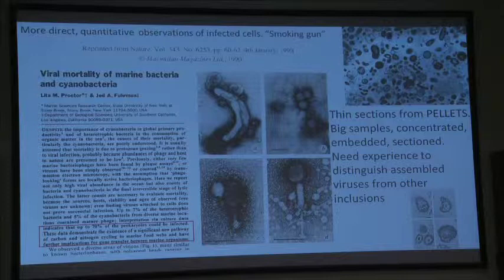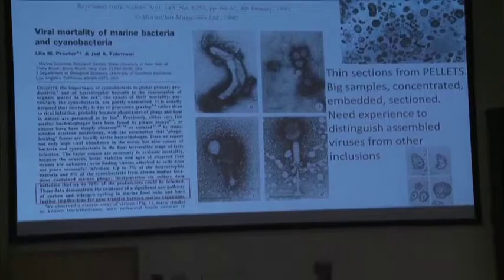The smoking gun we were looking for — we came up with a different way to find it. What Lita and I did was look at thin sections of bacteria and look for viruses in the final stage of infection, where you have assembled phage inside getting ready to break the cell open. You could look inside and find what fraction of cells were visibly infected. We had to get a lot of water, make pellets, do embedding and thin sectioning — a lot of work. But we came to the conclusion that up to 70% of the prokaryotes could be infected based upon a model I'll describe. The data demonstrated the existence of a significant new pathway of carbon and nitrogen cycling in marine food webs. This paper was published January 4, 1990.